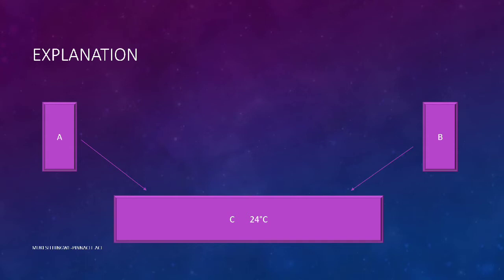Hence it is logical and obvious that systems A and B are both having the temperature of 24 degrees Celsius, and are therefore in thermal equilibrium with each other.